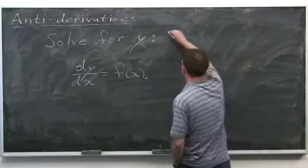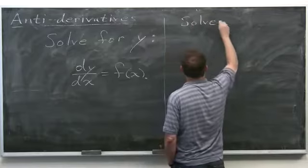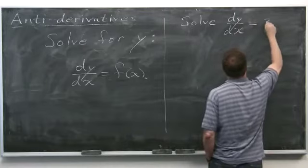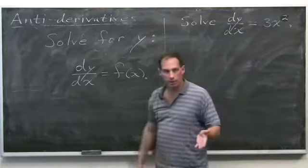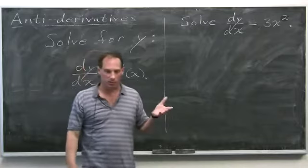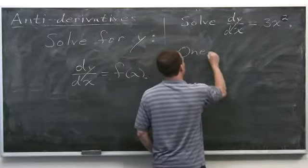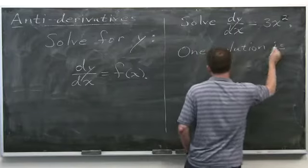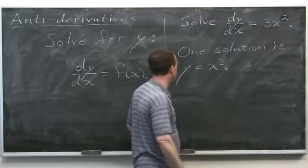An example: solve dy/dx equals 3x squared. How do you do this? Hopefully you can quickly think of a function whose derivative is 3x squared — namely x cubed. One solution is y equals x cubed. Because if y is x cubed, its derivative is certainly 3x squared.